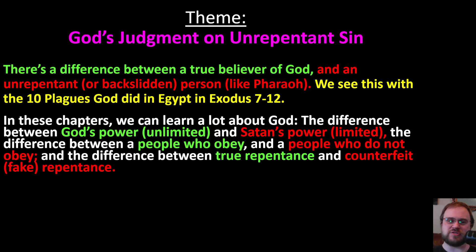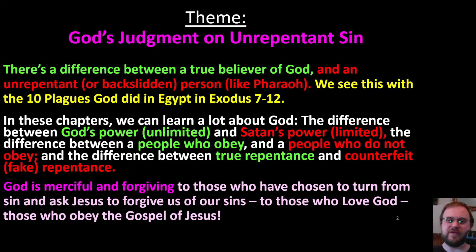In these chapters, we can learn a lot about God — the difference between God's power, which is unlimited, and Satan's power, which is limited. Also the difference between a people who obey and a people who do not obey, and the difference between true repentance and counterfeit or fake repentance. God is merciful and forgiving to those who have chosen to turn from sin and who have asked Jesus to forgive them, to those who love God and obey the gospel of Jesus Christ.